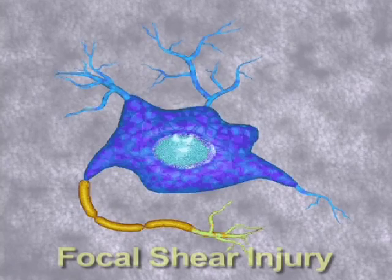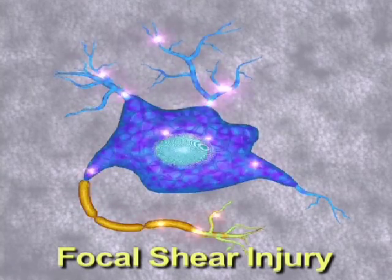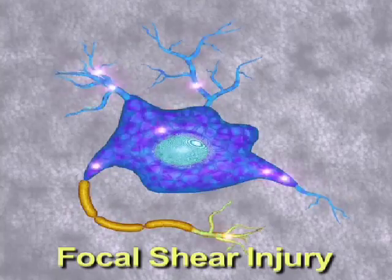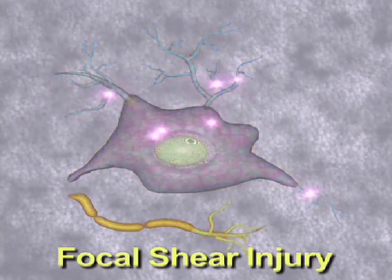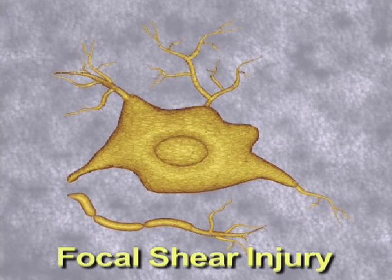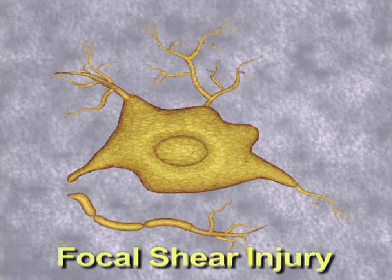In diffuse axonal injury, this type of shearing and tearing of axons is occurring all over the brain — that's what we mean by diffuse. In a focal shear injury, there is rupture of the axons around a particular area that has been injured, and this can continue to occur after the injury has happened.